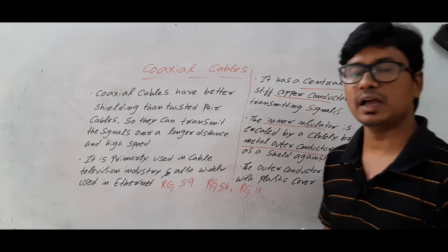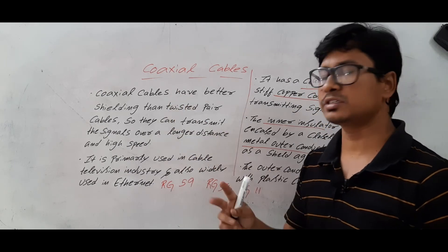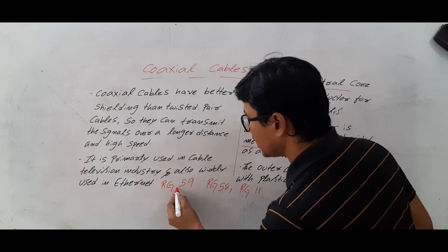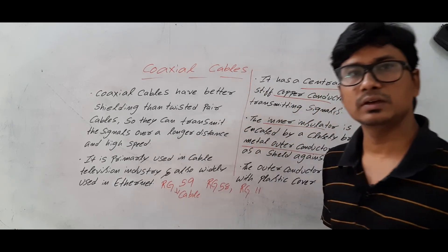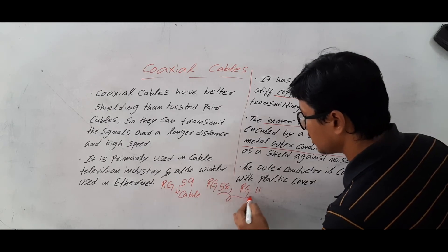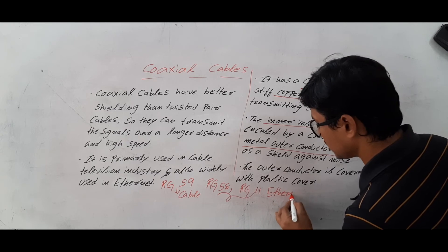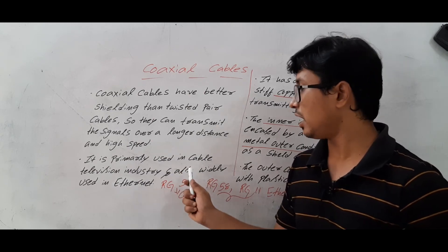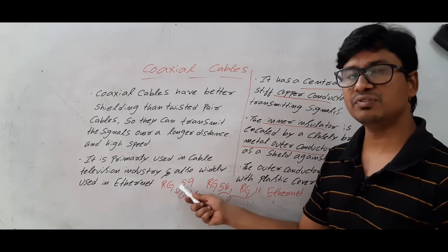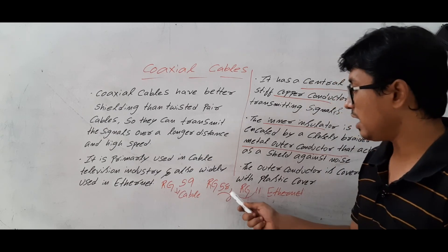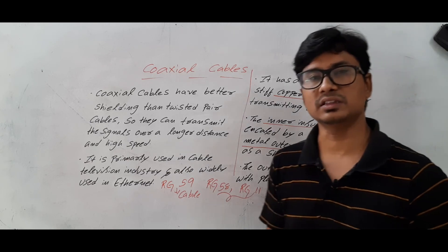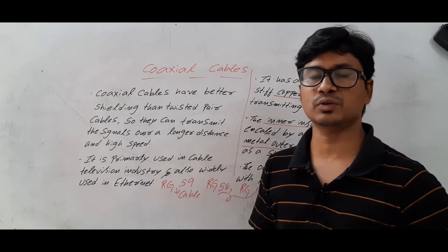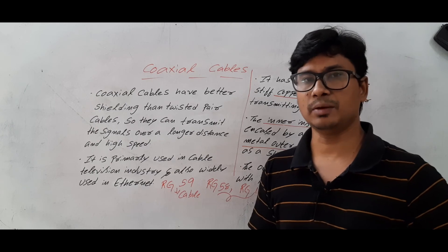The radio government has categorized the coaxial cables into three types: RG-59, RG-58, and RG-11. RG-59 will be used in the cable TV connection, whereas RG-58 and RG-11 will be used in Ethernet. As I said earlier, these coaxial cables are widely used in cable television and also in Ethernet, so RG-59 is used for cable TV and RG-58 and RG-11 are used in Ethernet.